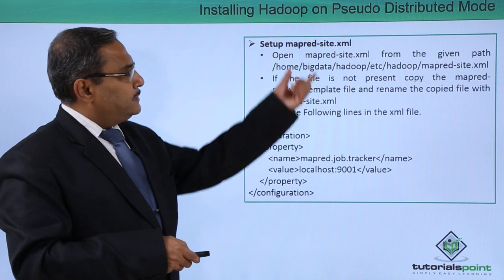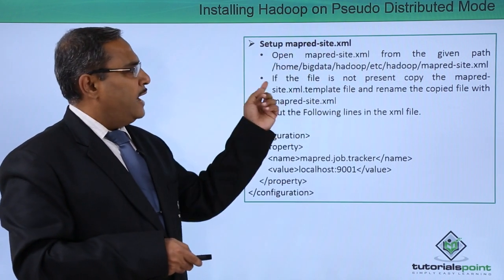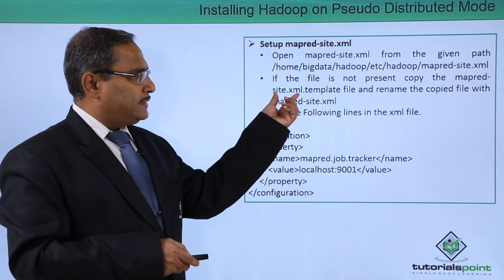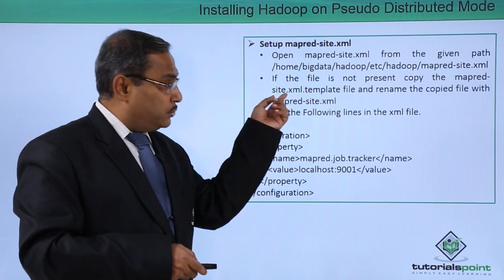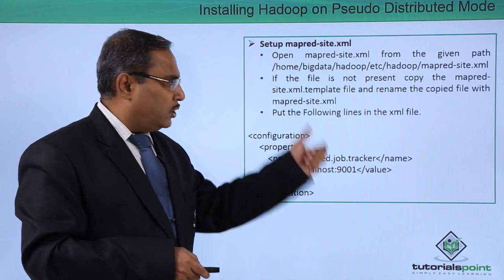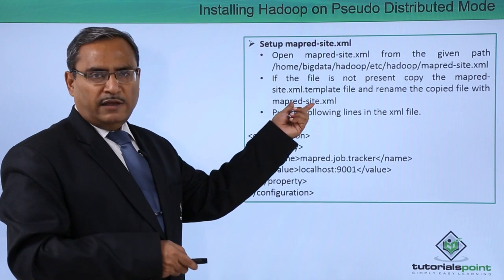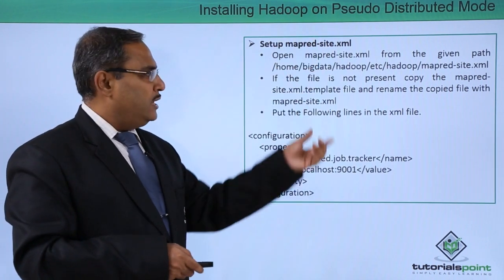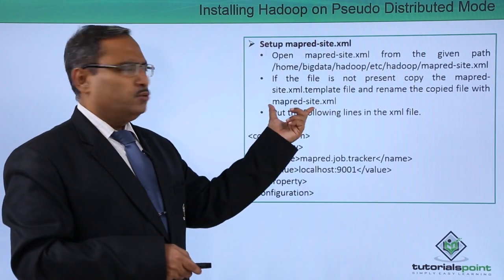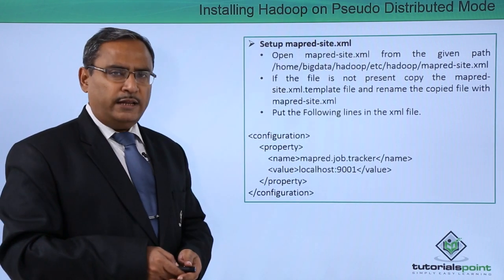The last one is MapRed-site.xml, found in this respective folder. If the file is not present, copy the MapRed-site.xml.template file — that template file will be there — and rename the copied file to MapRed-site.xml. Just make a copy of that, rename it, and then put the following XML lines into that file.